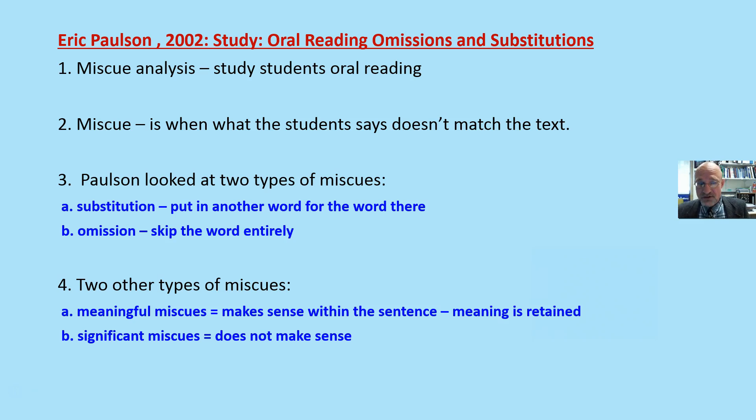Paulson looked at two types of miscues. A substitution is when you put another word in there for the word that is actually there, and an omission when you skip the word entirely.